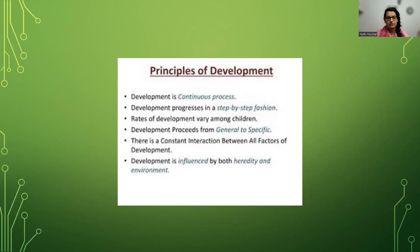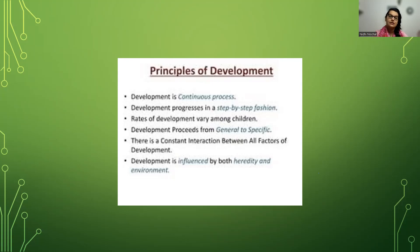The rates of development vary among children. Not every child will develop simultaneously or in the same way — it varies from child to child. Then, development proceeds from general to specific. First, development happens at a general, basic level, and then gradually advances to the specific level.